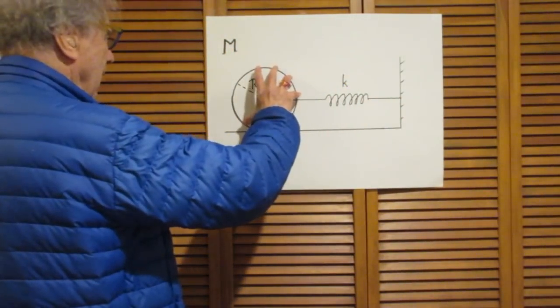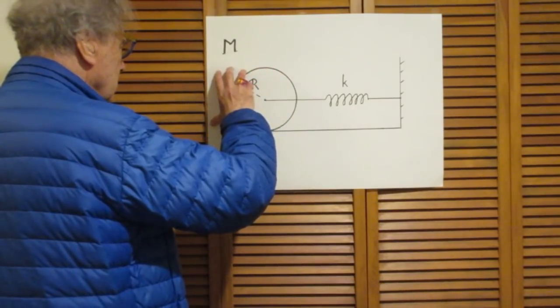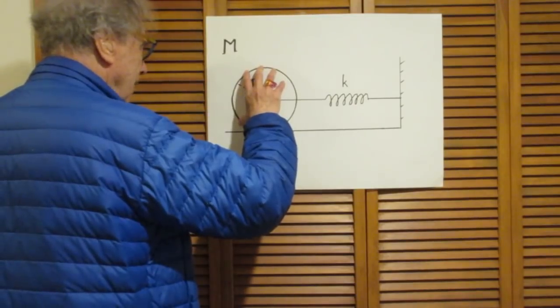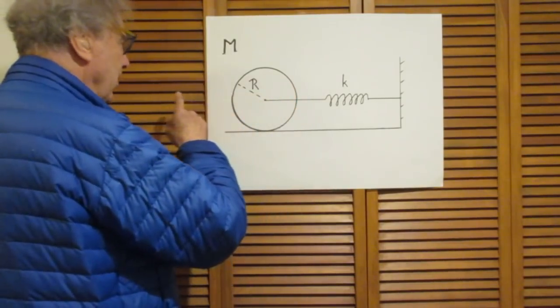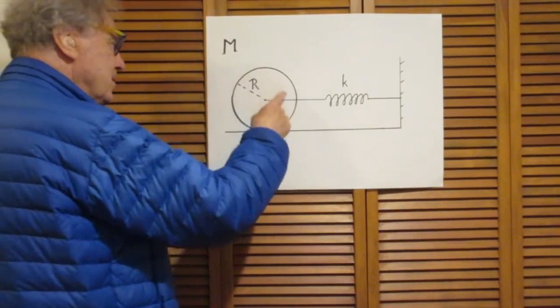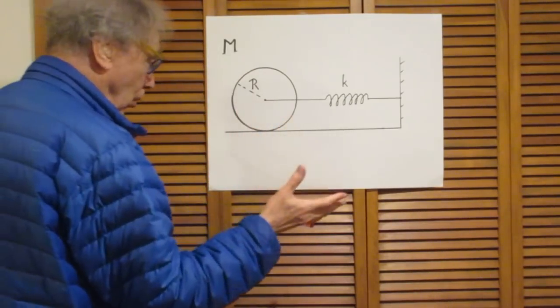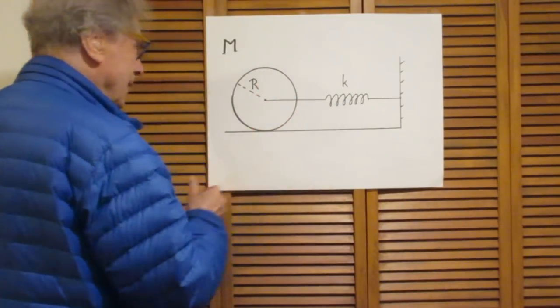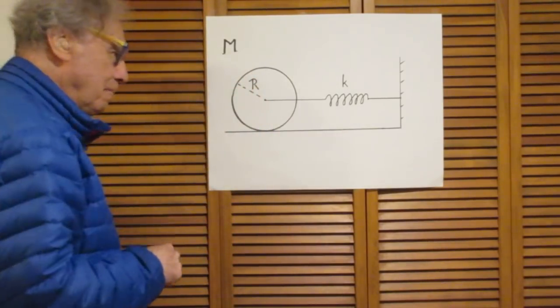Now I take this disk in my hand and move it perhaps to the left and let it go, or move it to the right and let it go. It will start to oscillate. The disk will always be in pure roll — there are times it doesn't roll at all, times it stands still, times it rolls clockwise, and times it rolls anticlockwise. All I want to know is: what is the period T of the oscillations?